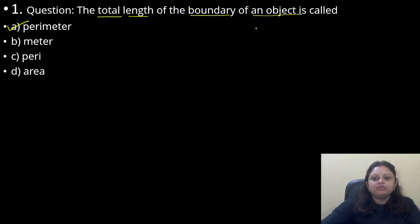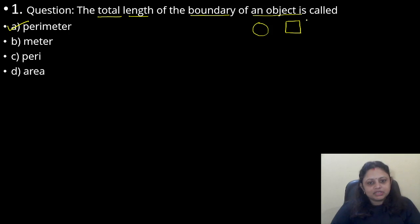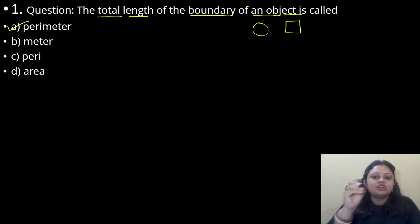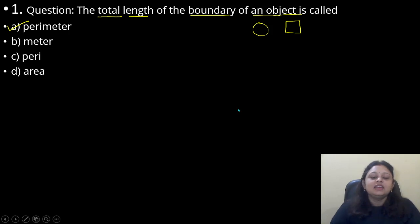So if you are taking a circle, a square, a rectangle, or a triangle — whatever object you take — the total length of the boundary is the perimeter. Coming to the next question.